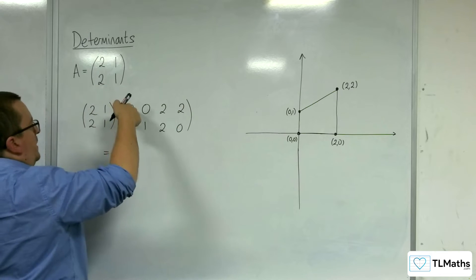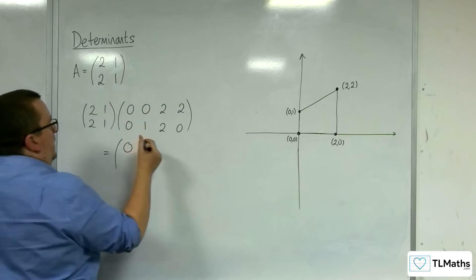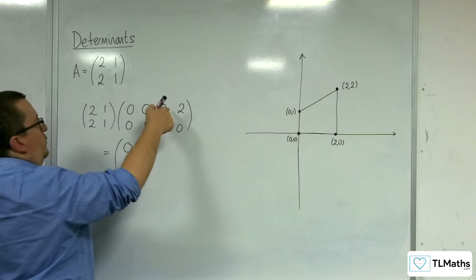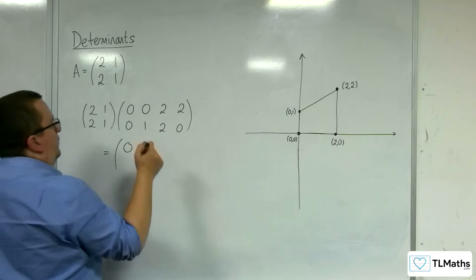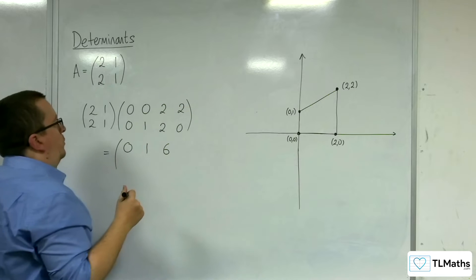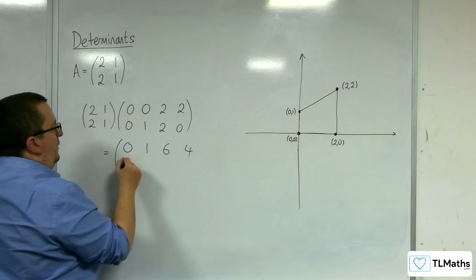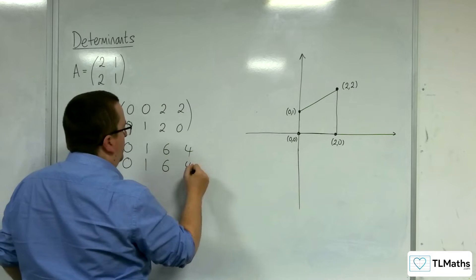Okay, so we've got 2, 1 being applied to each of these, so we're going to get 0 first, then we're going to get 1, then we're going to get 4 plus 2, so 6. Then we're going to get 4 there. So then 2, 1 applied to each of those, we're going to get the same thing, 0, 1, 6, and 4.